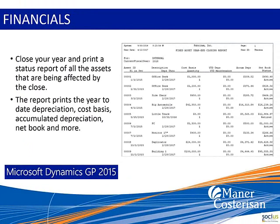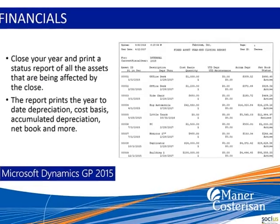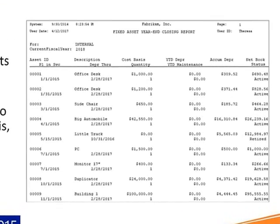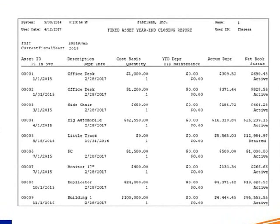The next thing in financials is a year-end close report for fixed assets. This has been something clients have asked for over the years, because fixed assets year-end close has always been kind of an enigma — you push the button, it does something, and you hope it did it right. They've now added a closing report that will come out much the same way a financial year-end close happens. I'm not going to show that because I don't want to close a fixed asset year in my system right now, but there's a picture of it on the screen.